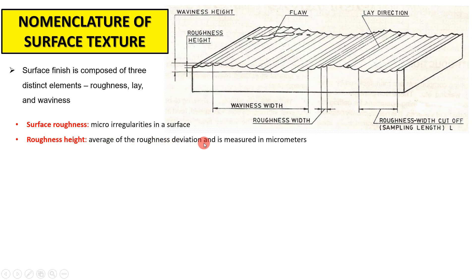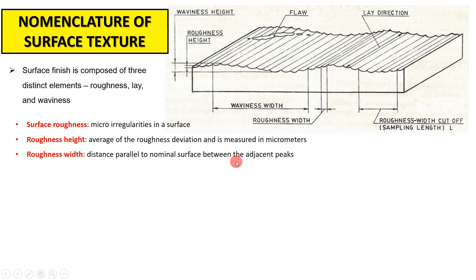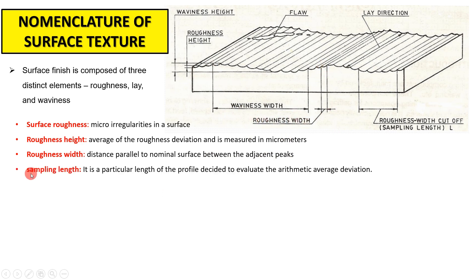Roughness height is the average roughness deviation, measured in micrometers. Roughness width is the distance parallel to the nominal surface between adjacent peaks. Sampling length is the particular length of the profile decided to evaluate the arithmetic average deviation — we do not check the complete surface, only a portion. For example, measuring from one point to another along the surface gives the sampling length.